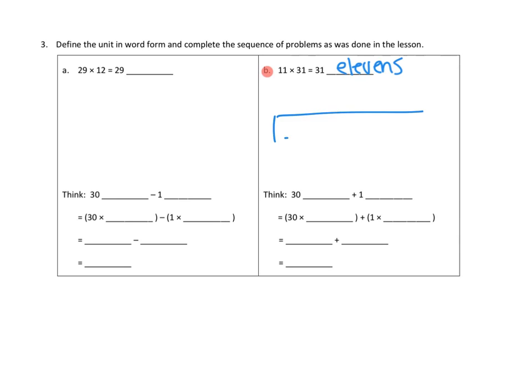So we could do a tape diagram. Start off with our elevens. Here's our first one. Here's our second one. Dot, dot, dot, dot, dot, dot. Get out all the way up to 30, or 30th eleven. And then there's one more on the outside, 31 elevens. All right, so we're thinking about 30 elevens times plus 1 eleven.